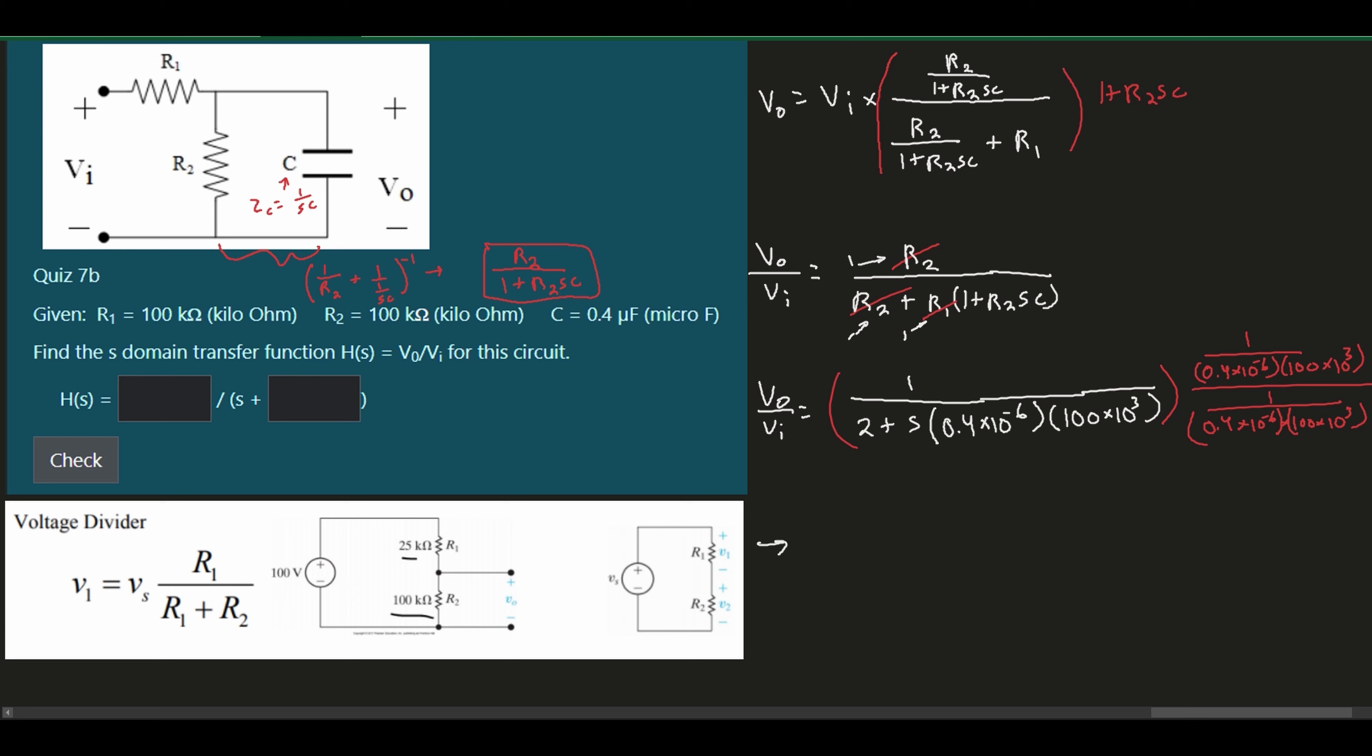Plugging this into a calculator, we're going to get that our V0 over VI is equal to our H of S, which is equal to, on top, 25 divided by 50 plus S. Don't forget this 2 when you're plugging it into the calculator. You'll have 2 divided by all of this down here. Super important to note. So this is going to be our H of S. So plugging in our answer, we will have 25, and then we will have 50. And that's how you'd go about solving this quiz problem.